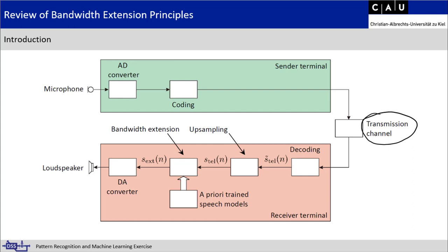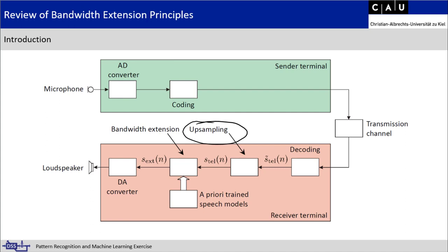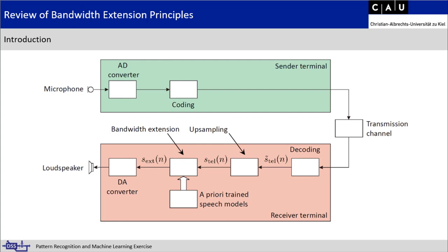The signal is transmitted over a band-limited channel, so we can't transmit the full broadband signal — only a subset of it. At the receiver, we decode the signal and have our narrowband transmission signal. We then apply bandwidth extension to improve the sound, upsampling the data to make room for new information. We can then apply different methods — basic upsampling and mirroring, or more advanced methods with neural networks or codebooks — and output the extended signal through a digital-to-analog converter.